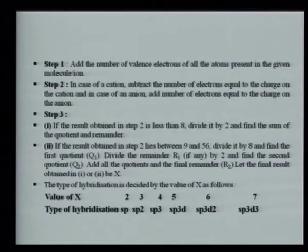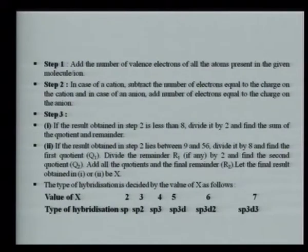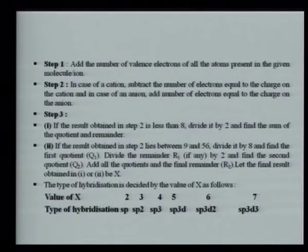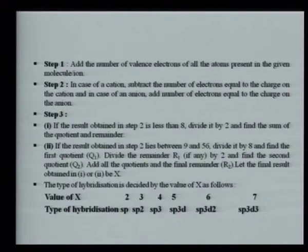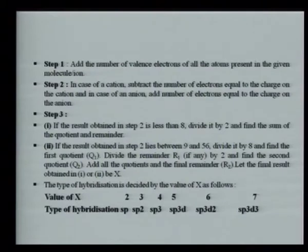When finding hybridization: Step 1 — add the valence electrons of all atoms. Step 2 — for a cation subtract electrons equal to the charge; for an anion add electrons equal to the charge. Step 3 — divide accordingly and find the result x. The hybridization is determined by x: x = 2 gives sp, x = 3 gives sp², x = 4 gives sp³, x = 5 gives sp³d, x = 6 gives sp³d², x = 7 gives sp³d³.